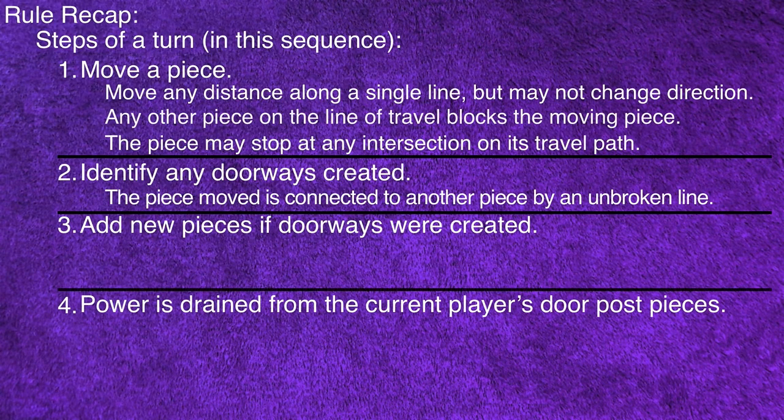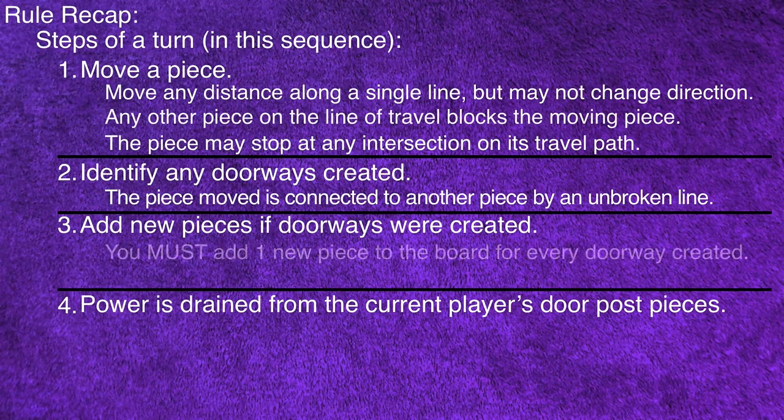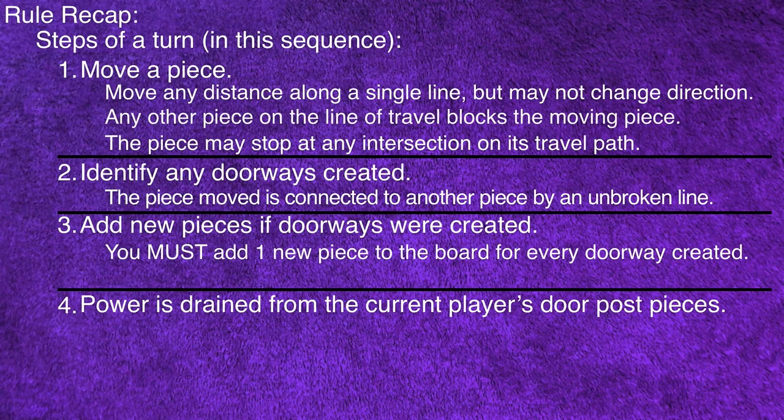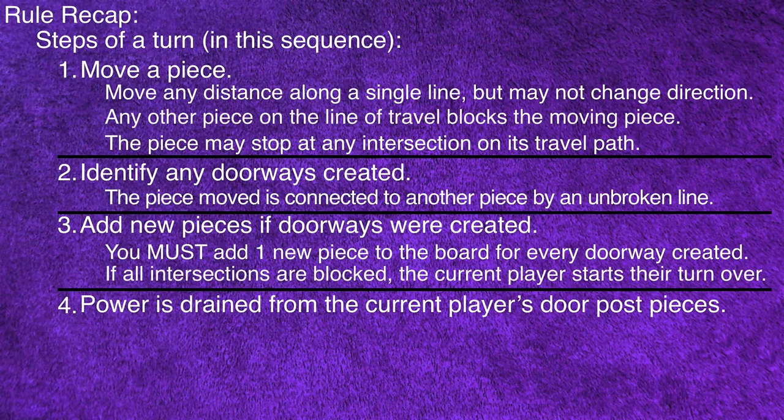When adding new pieces, you must add one new piece to the board for every doorway created. If all of the intersections of a doorway are blocked, the piece that was moved is returned to its starting location. Any pieces added this turn are removed from the board and the player starts their turn over.